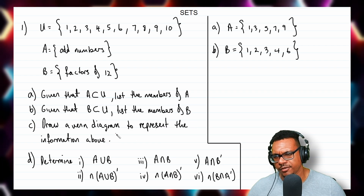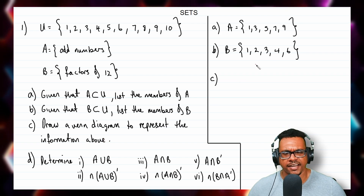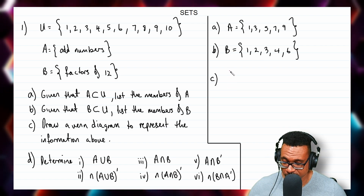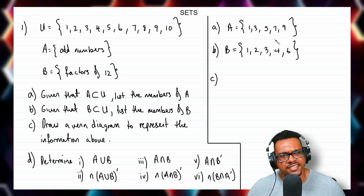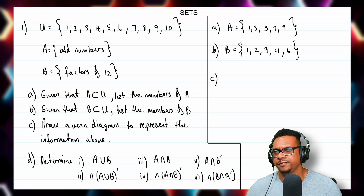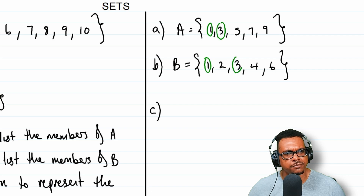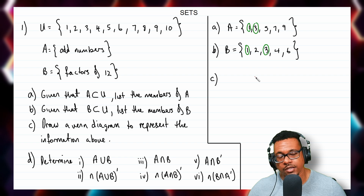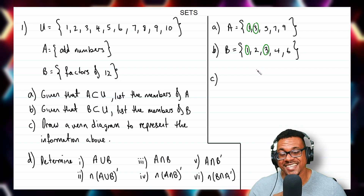Now we want to draw a Venn diagram for part C. Before drawing it, we must determine if the circles for set A and set B will be disjoint, intersecting, or a subset. Going through the elements, we find 1 is in both set A and set B, and 3 is in both set A and set B. So only 1 and 3 are common to both sets, which means we have intersecting circles.